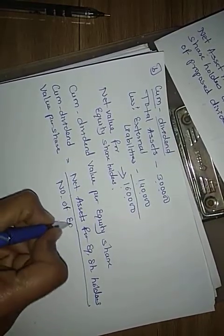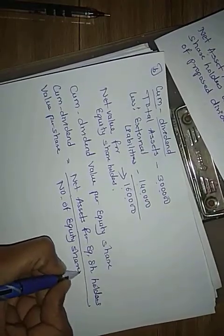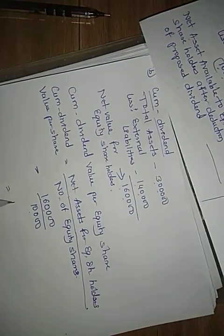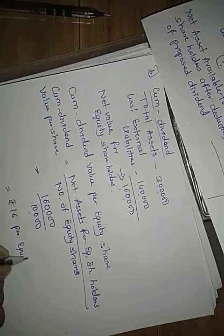The formula for cum-dividend value per equity share is: net assets available to equity shareholders divided by number of equity shares. Net assets is one lakh sixty thousand, divided by ten thousand equity shares, giving us rupees sixteen per equity share.